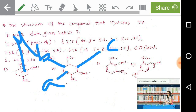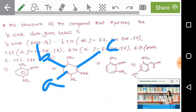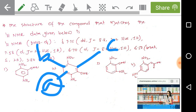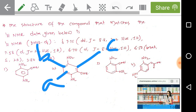The first doublet splits into again two doublets, and the next peak also splits into another doublet — that is the double doublet present on hydrogen B. So we assign the 7.75 delta value to proton B, where the coupling constant is 8.8 Hz.